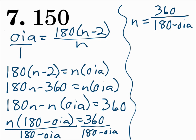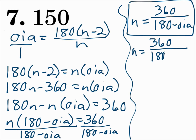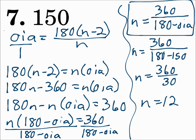Definitely write that formula down. When you're given one interior angle, you can use that formula to solve for N very quickly. So let's use this formula now, where one interior angle has a measure of 150 degrees. N equals 360 divided by 180 minus 150. 180 minus 150 is 30, and 360 divided by 30 is 12. This is a dodecagon with 12 sides.